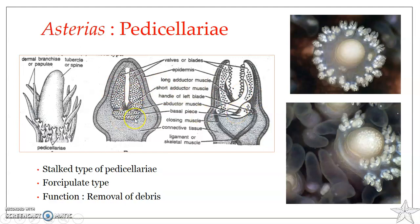There are two kinds of pedicillariae based upon how they are positioned. One is the straight type of pedicillariae, and the other is the crossed type. In the crossed type you can see the two valves crossing each other. In the straight type, the valves are straight and parallel, and when closed they meet together along their entire length. In the crossed type, the two valves cross each other just like a pair of scissors.